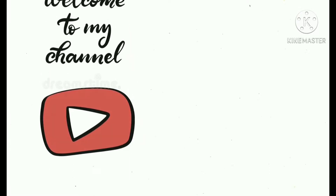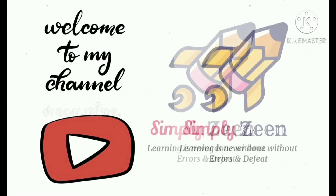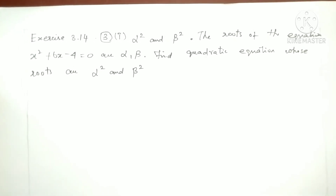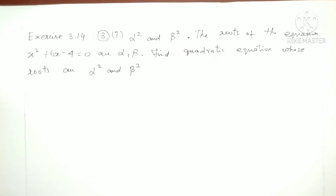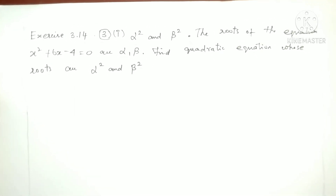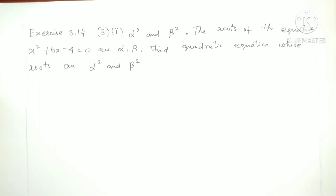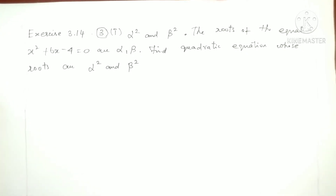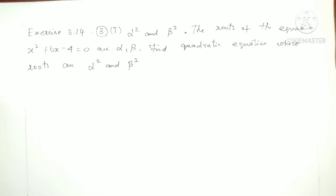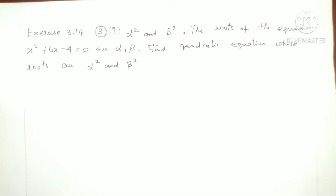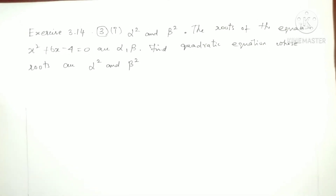Hello friends, welcome to my channel SimpliZee. It's me Zareen. Exercise 3.14, first sum. The roots of the equation x² plus 6x minus 4 equals 0 are alpha and beta. Find the quadratic equation whose roots are alpha square and beta square.